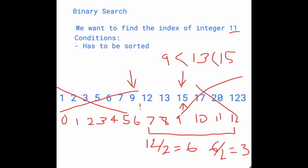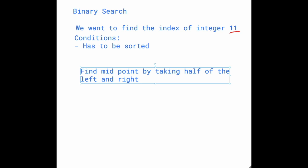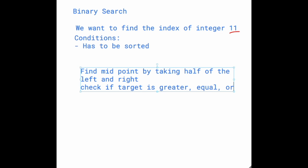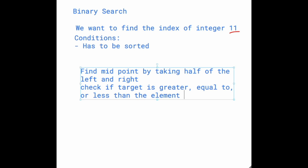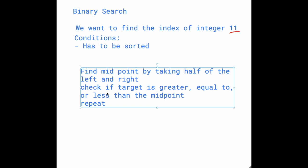So that's basically binary search. To sum it up, you find the midpoint, check whether the target is greater than, equal to, or less than that midpoint element, and narrow the range accordingly. I'll explain more about the left and right pointers in the next video, but this is the general idea of binary search. Thank you for watching.